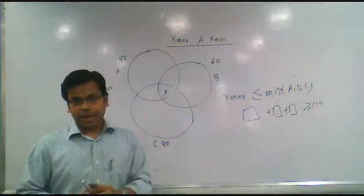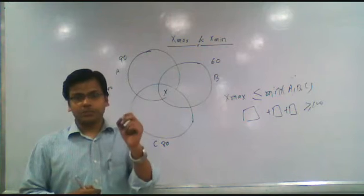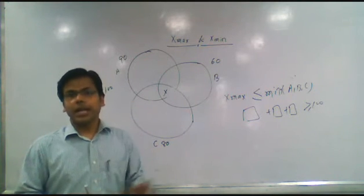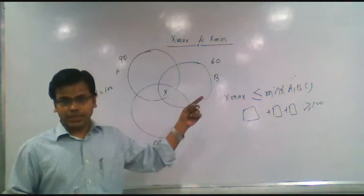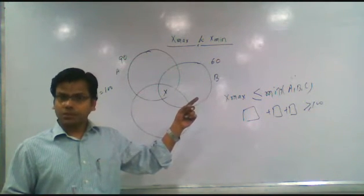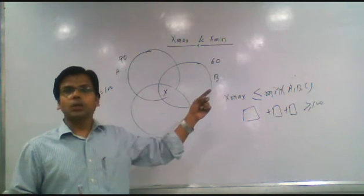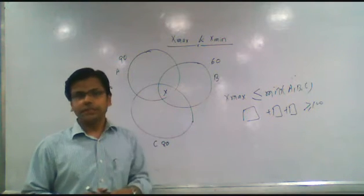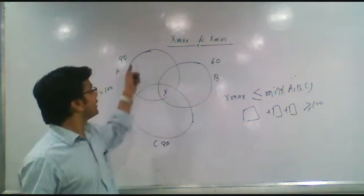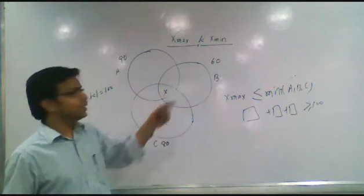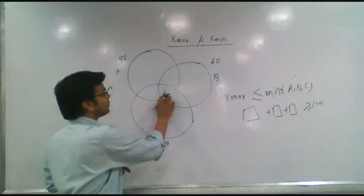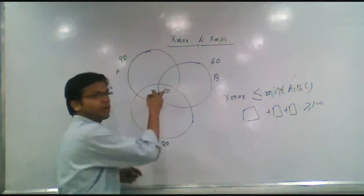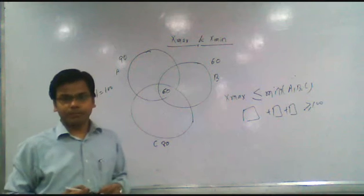Now let's work on the x maxima. X maxima works on two concepts. First, x maxima is always less than or equal to the minimum value of A, B, and C. Here the minimum value of A, B, C is 60, so x maxima would be either 60 or smaller than 60.